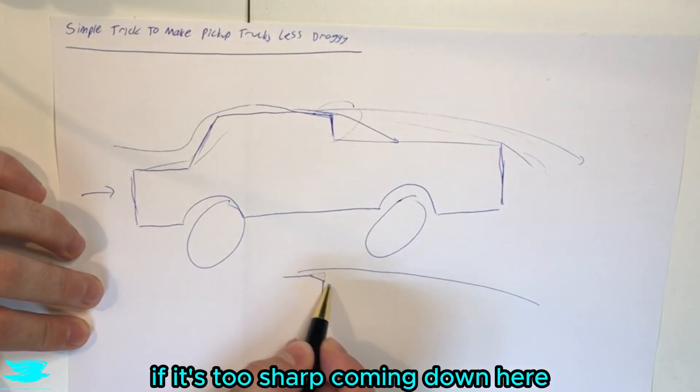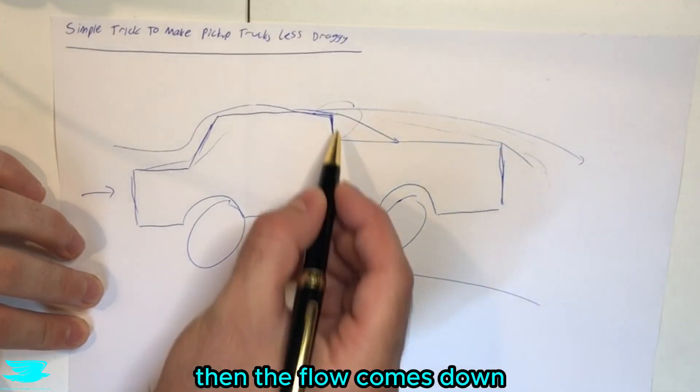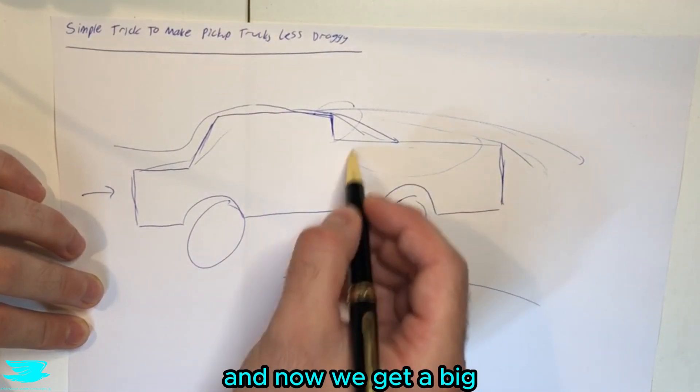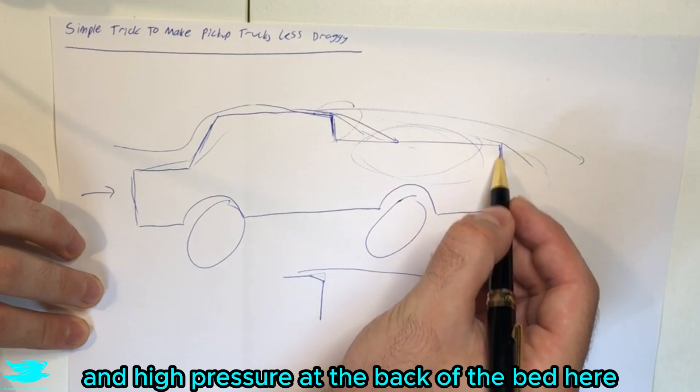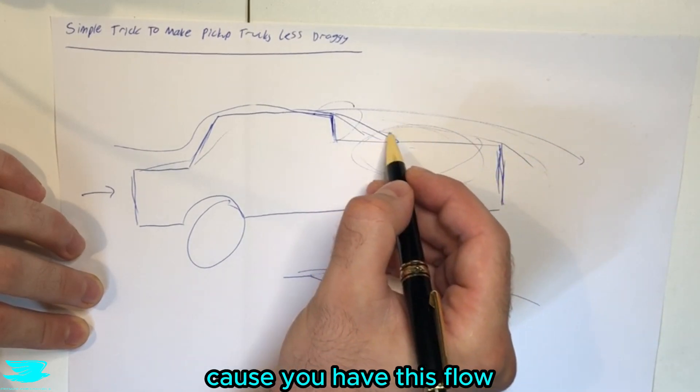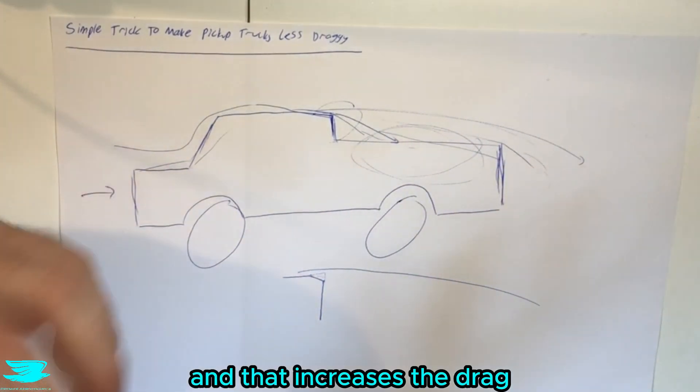If it's too steep coming down here then the flow comes down and hits into the bed and now we get a big recirculation zone in the bed and low pressure here and high pressure at the back of the bed here because you have this flow coming in and hitting it and that increases drag even more.